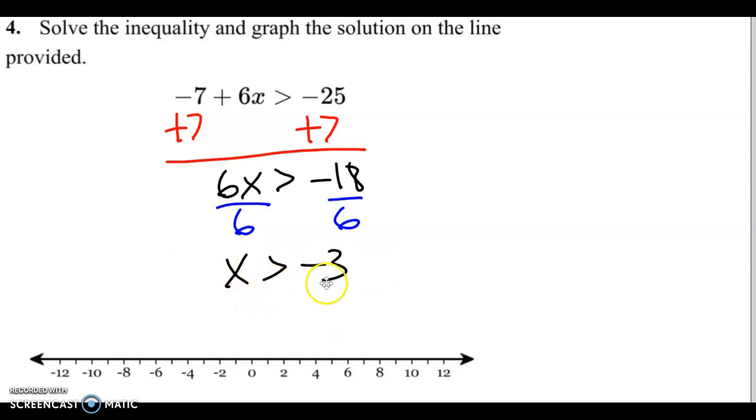We got x is greater than negative 3. We go to negative 3 on the number line. This time we have an open circle because it doesn't have an equal to. So x is greater than negative 3, and we go the same direction as our inequality is pointing.